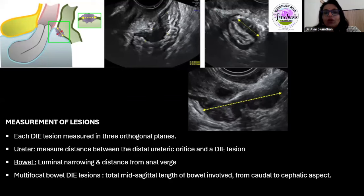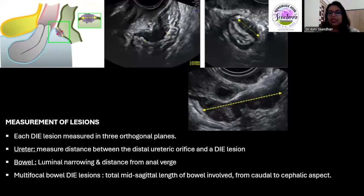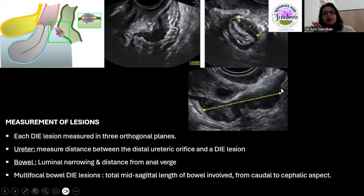For any endometriotic deposit, we need to measure it in three dimensions in three orthogonal planes. For a ureteric deposit, mention the distance from the vesicoureteric junction. For a bowel deposit, state whether it is causing luminal compression, how much luminal compromise is present, and provide a measurement of the deposit from the anal verge. For multicentric deposits, measure each individually. For multifocal deposits, take the craniocaudal dimension, and the distance from the caudal end of the deposit to the anal verge.